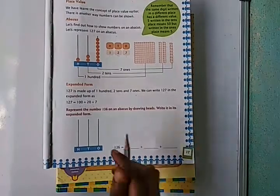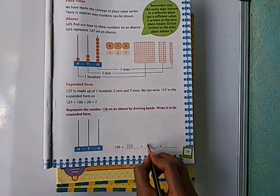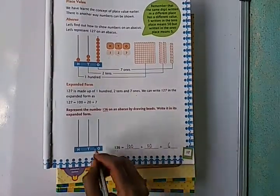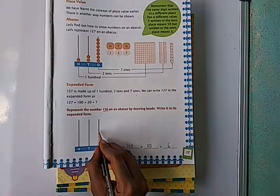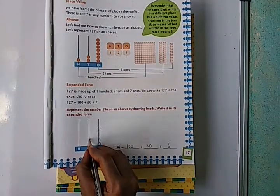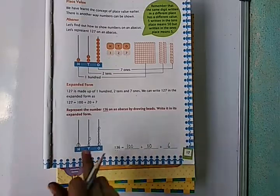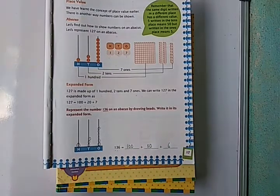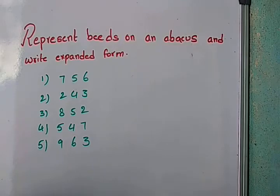So see here, 136: 100 + 30 + 6. One, two, three, four, five, six. One, two, three. One. This is the way to represent on abacus. This is your assignment, do this as homework.